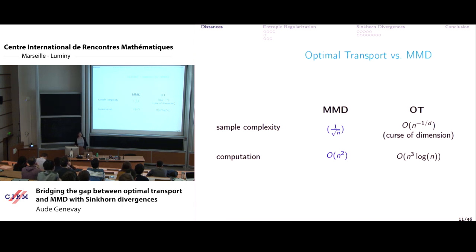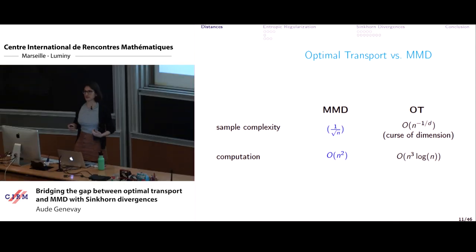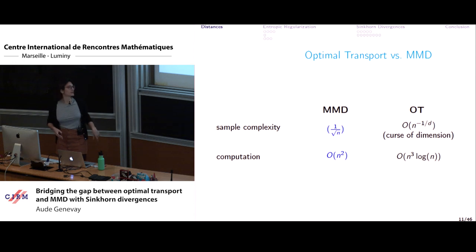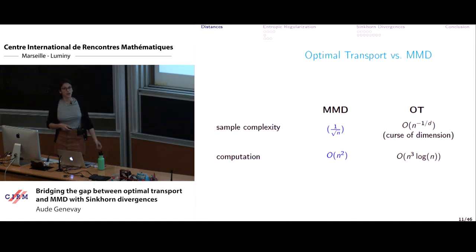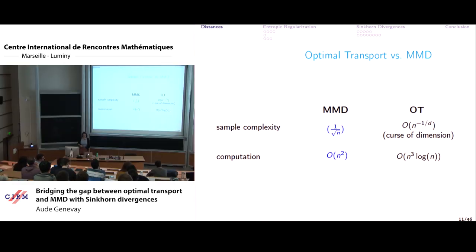Now that we have these two options, let's compare them for learning purposes. Two things we care about are sample complexity — how robust it is to estimate distance from samples — and computational time. For MMD estimated from N samples, you converge at rate 1/√N, independent of dimension. Optimal transport suffers from a curse of dimensionality: the rate degrades as N^{-1/√d}, so the required samples grow exponentially with dimension.